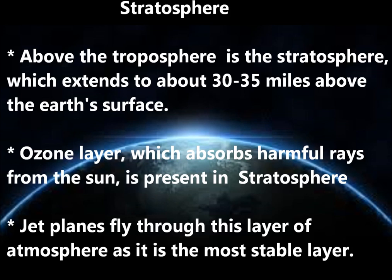Above the Troposphere is the Stratosphere, which extends to about 30–35 miles above the Earth's surface. The ozone layer, which absorbs harmful rays from the Sun, is present in the Stratosphere. Jet planes fly through this layer as it is the most stable layer.